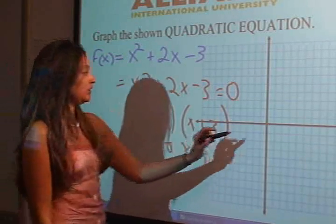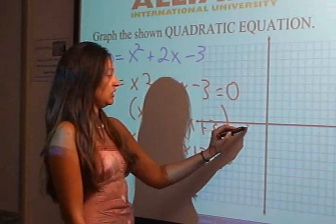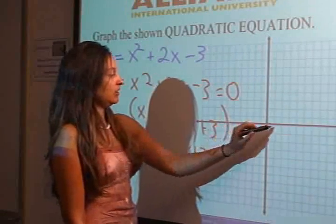Let's plot those here. This is negative 1, 2, 3, one right there, and positive 1.